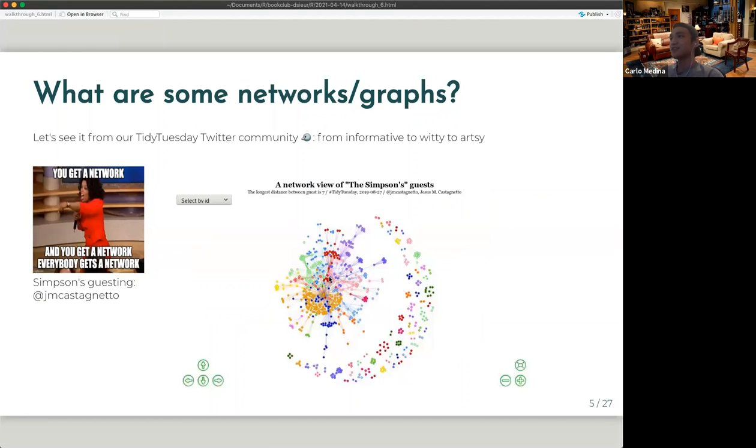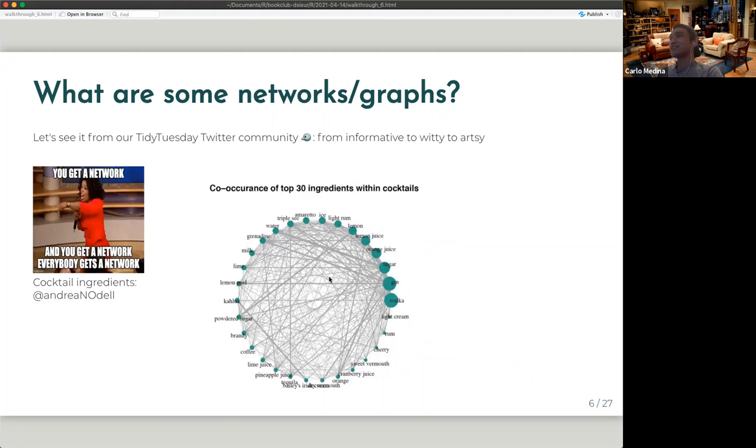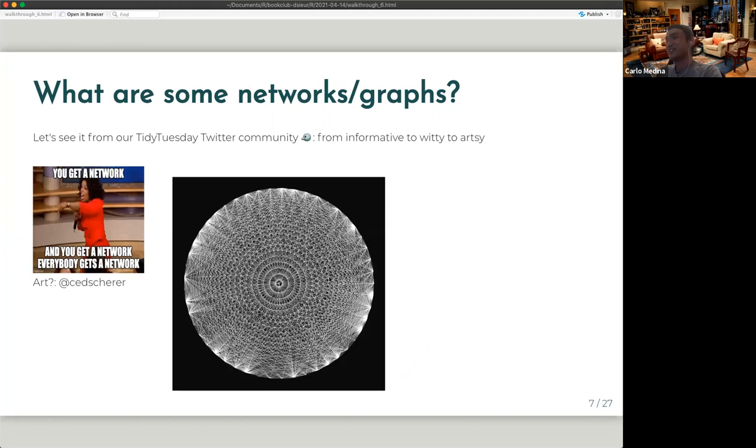Another one is Simpsons guesting. So you can go beyond serious stuff with network analysis. You can do fun stuff like guestings on Simpsons, co-occurrences of ingredients in a cocktail. And then the last thing is you can just make art out of a network. So this is a submission by Cedric Scherer, I think, last year, if I'm not mistaken. So those are some examples of networks and graphs.